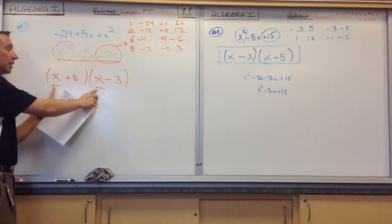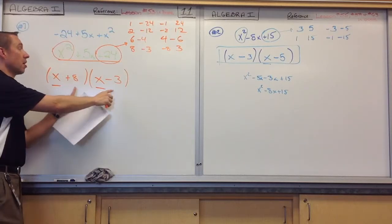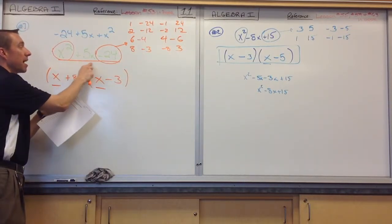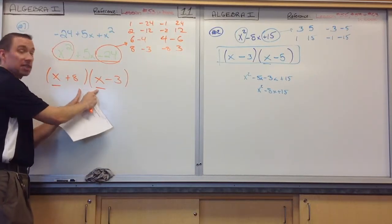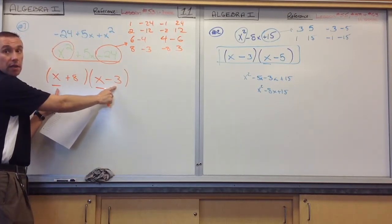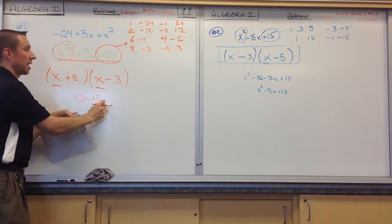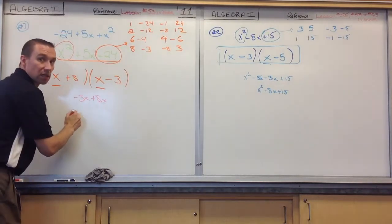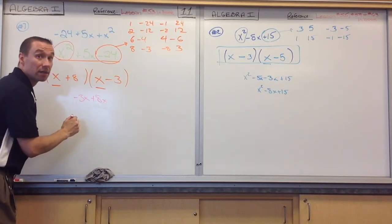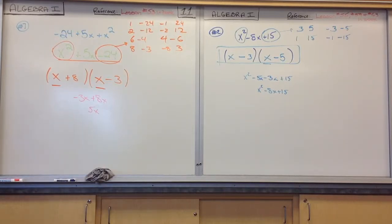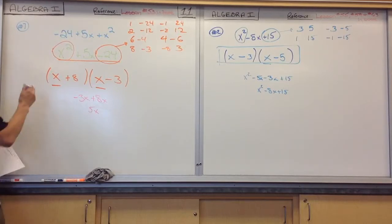Now remember, we know that this times this is going to work out because we factored it directly. What we need to check is the middle term — made up of the outers plus the inners. The outers give me negative 3x. The inners give me 8x. Does negative 3x and 8x give you 5x? Yes. So I'm good — I just checked my answer. This right here is my final answer.